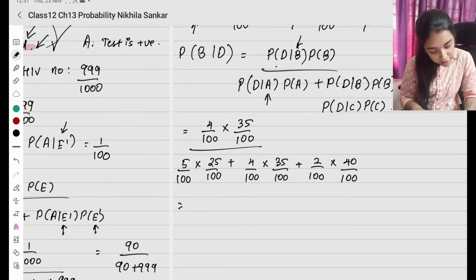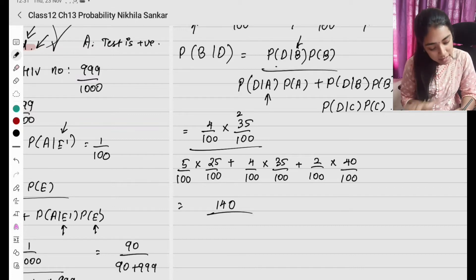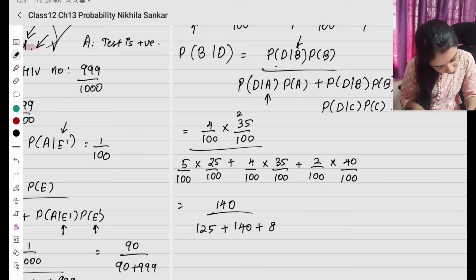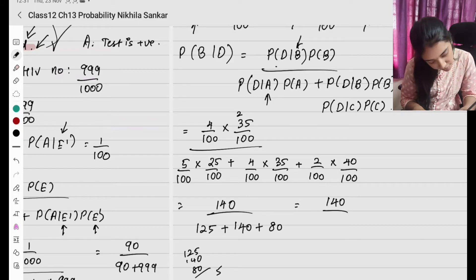Solving the numerator: 35 into 4 gives 140. For the denominator: 25 into 5 gives 125, plus 4 into 35 gives 140, plus 2 into 40 gives 80. So we have 140 divided by 125 plus 140 plus 80, which is 140 divided by 345.